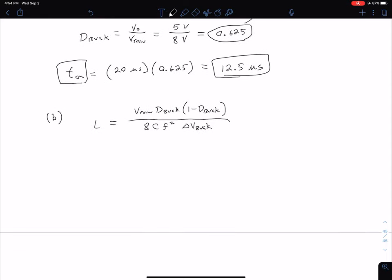So let's plug in those values. We have our inductance L equals, so we're going to have a big fraction here. Our V_RAW is 8 volts. Our duty cycle we found above to be 0.625. And then for 1 minus duty cycle, we just have 1 minus 0.625. Now in the denominator, we have our 8. And our C, we said we're just going to go with 0.1 microfarad. So we have 0.1 times 10 to the minus 6. I'm just putting everything back into the base units. And we then have our frequency, which is 50 kilohertz, so I'm going to write that as 50,000 hertz. We're going to square that.